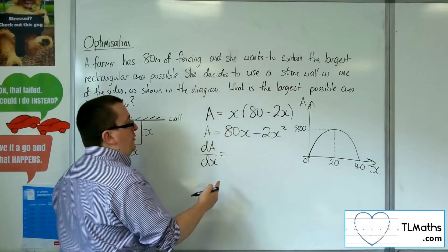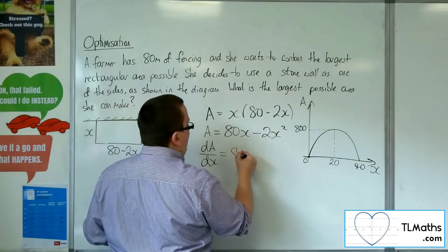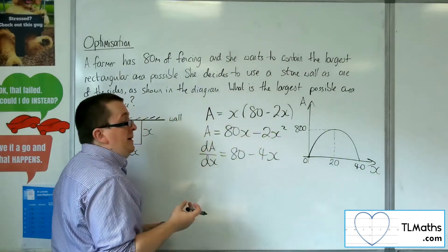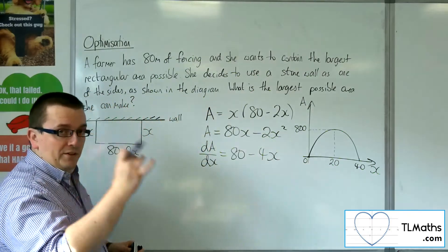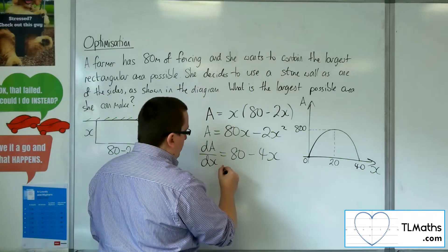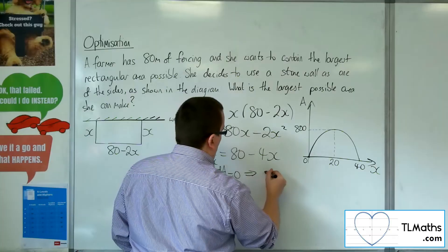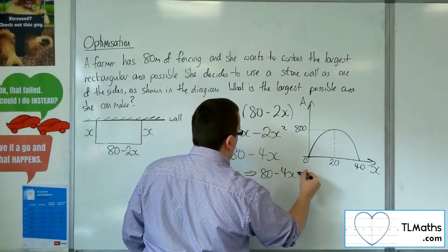What we could instead do is find dA by dx. So differentiating the area with respect to x. And I'm going to get 80 take away 4x. So I'm going to be looking for the stationary point of that. So that is when dA by dx is 0. So I want to solve 80 take away 4x is 0.